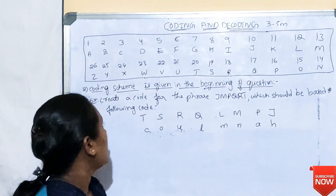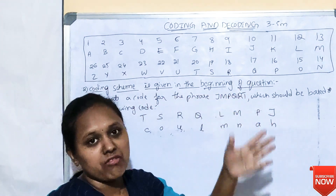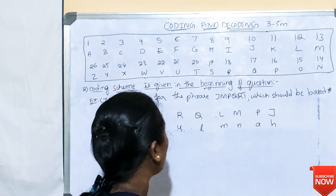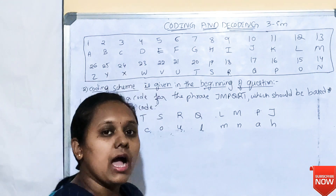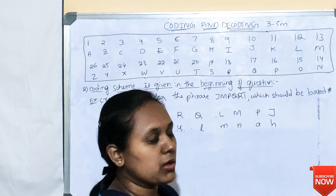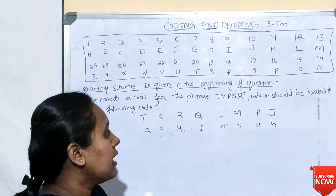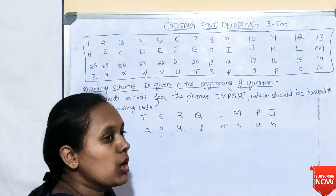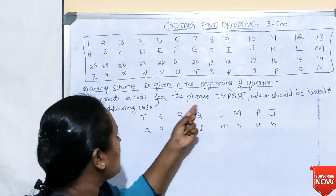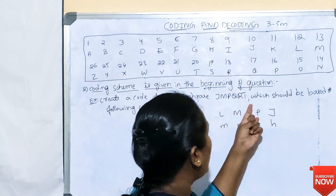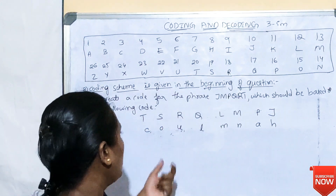The second type of pattern is where the coding scheme is given at the beginning of the question. When you use this coding pattern, you should use the given phrase to identify the code. For example: create a code for the phrase JMPQRT based on the following code.